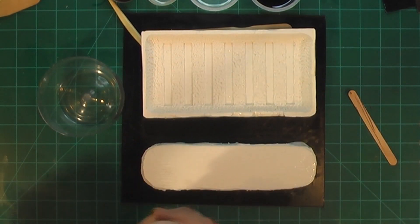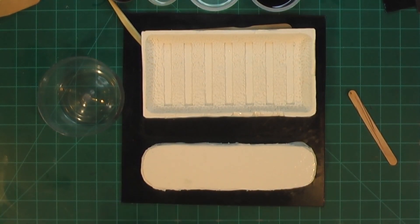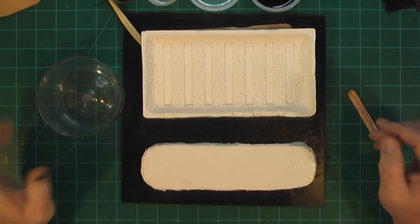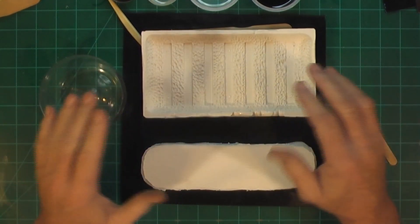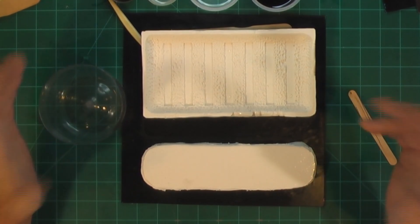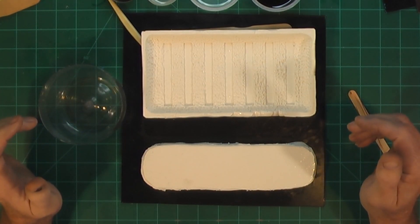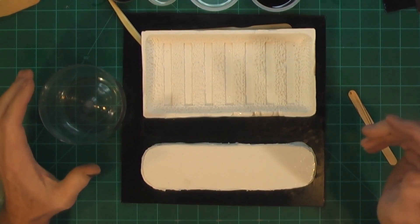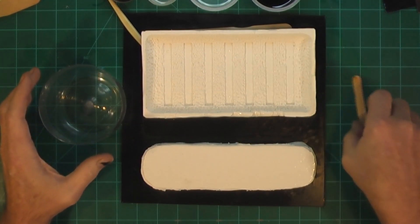So once we start mixing, we can't dilly-dally. We gotta mix it and get it poured. So I've got everything pre-measured. Hopefully I've figured out my volume correctly. If not, we'll pull it out and mix some more. So let's get started.